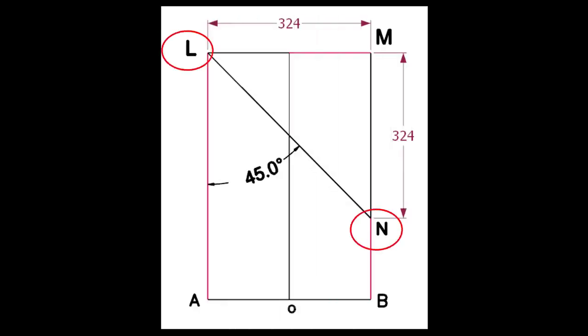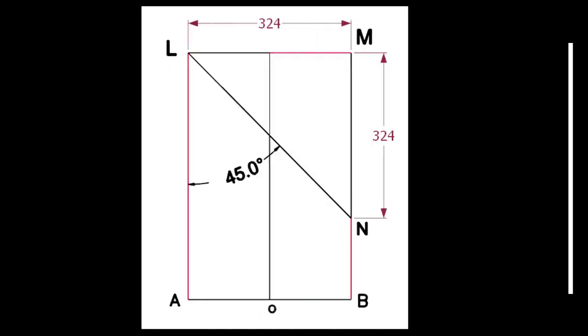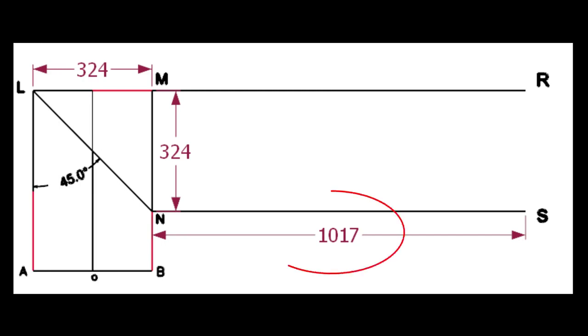Draw the line LN. We know the circumference of the pipe is 1017 millimeters. Draw the lines MR and NS.